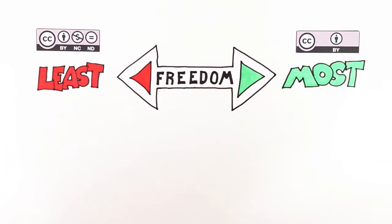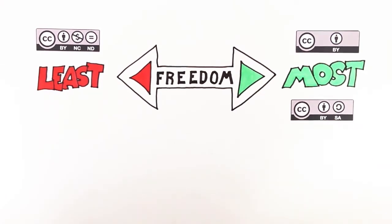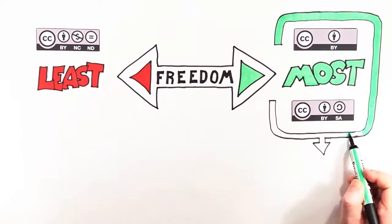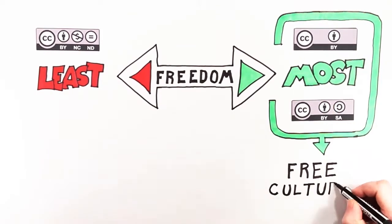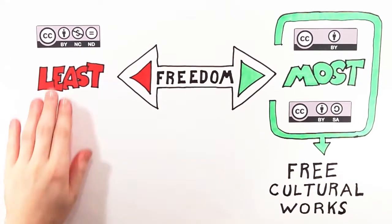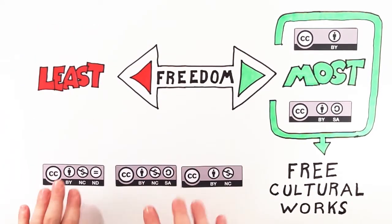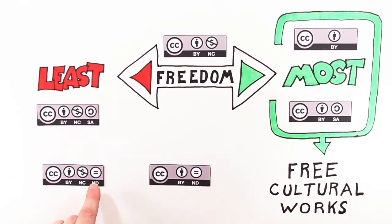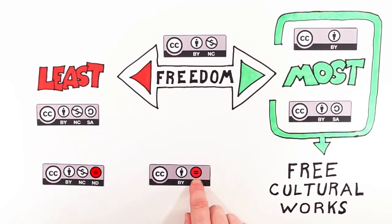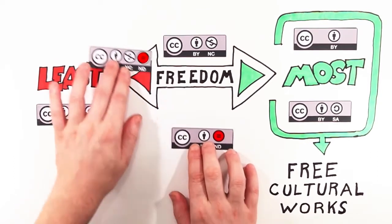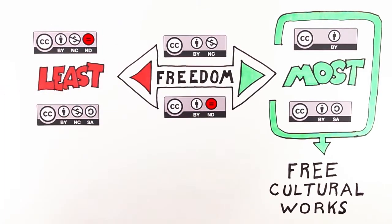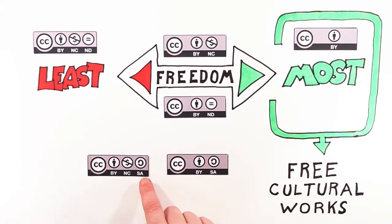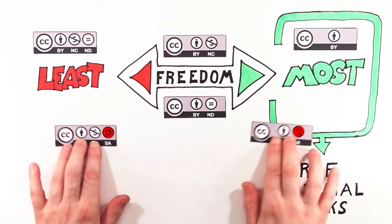The attribution license and the attribution share alike licenses are sometimes referred to as Free Cultural Works approved licenses. These three licenses restrict commercial use of a work, and these two licenses do not give permission for adapting or remixing. These two licenses require new works to be licensed under the same terms.